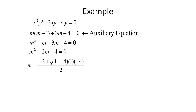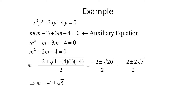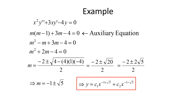Applying the quadratic formula: m = (-2 ± √(4 - 4·1·(-4))) / 2 = (-2 ± √20) / 2 = (-2 ± 2√5) / 2 = -1 ± √5. Since there is no imaginary number, these are two distinct real roots, so the solution is y = c1 x^{-1+√5} + c2 x^{-1-√5}.